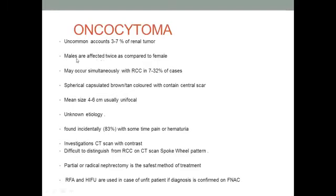Oncocytoma represents around 3 to 7 percent of tumors, is more common in males, and has an association with renal cell carcinoma. Tumor size is around 4 to 6 centimeters, usually unifocal. In contrast, angiomyolipoma is multifocal. About 83 percent present with pain or as incidental findings, or present with hematuria. CT scan with contrast is the most important investigation, though it can be very difficult to differentiate between RCC and oncocytoma. Treatment is partial nephrectomy, but radiofrequency ablation and HIFU can be options if the patient is unfit.